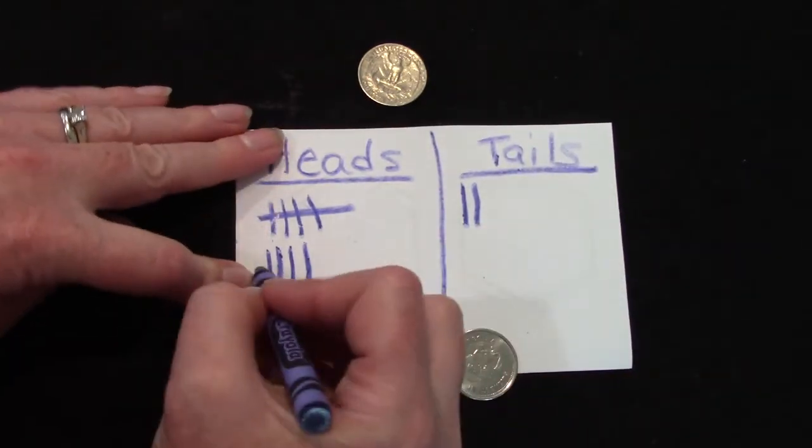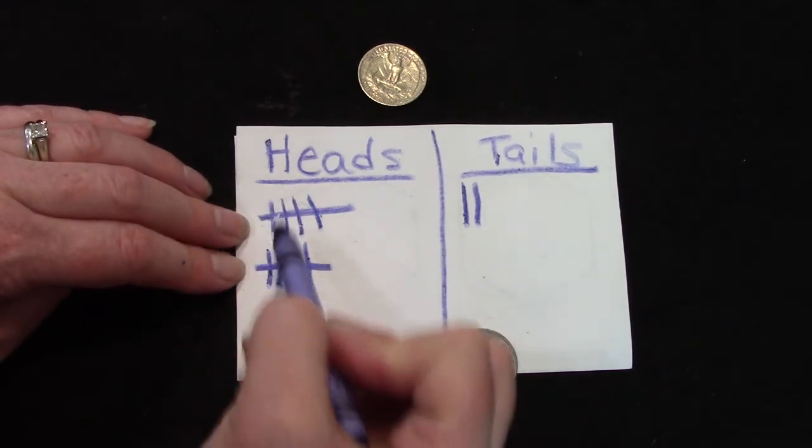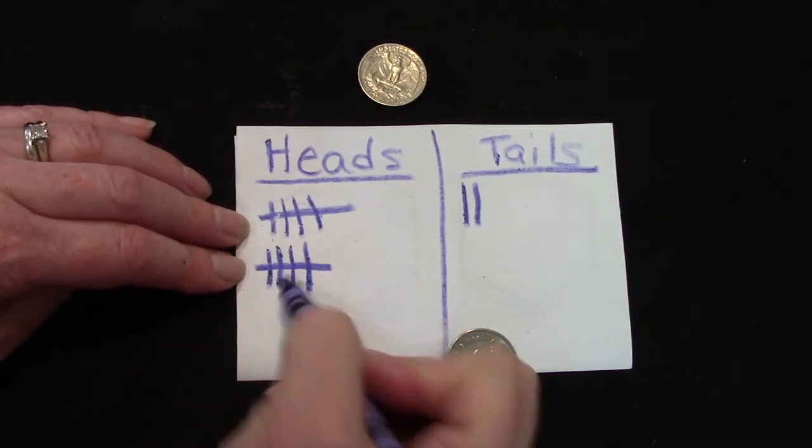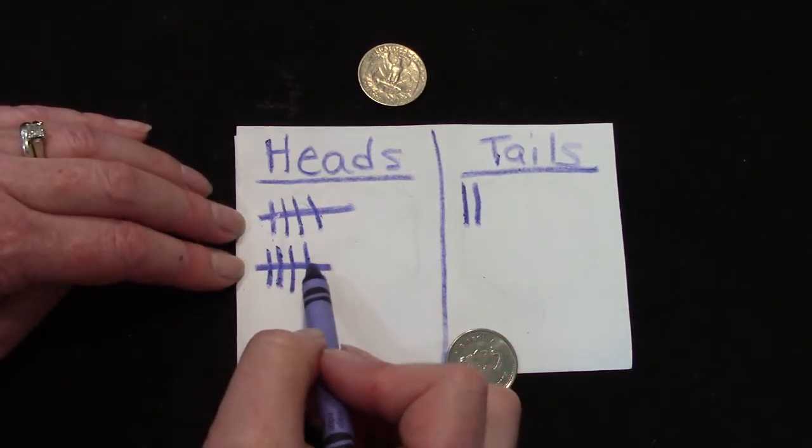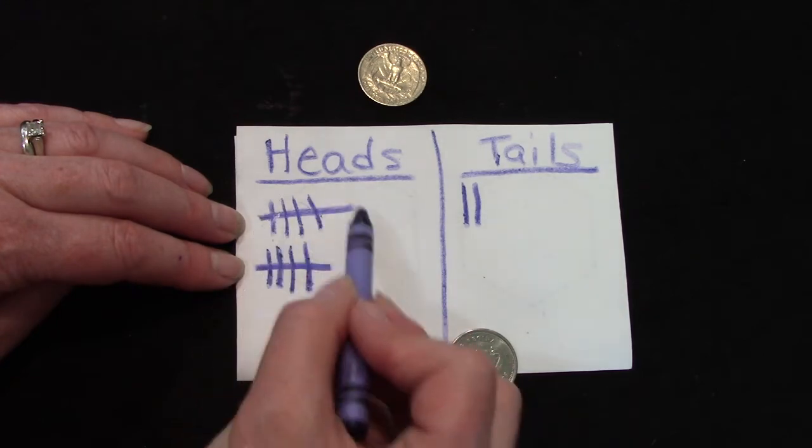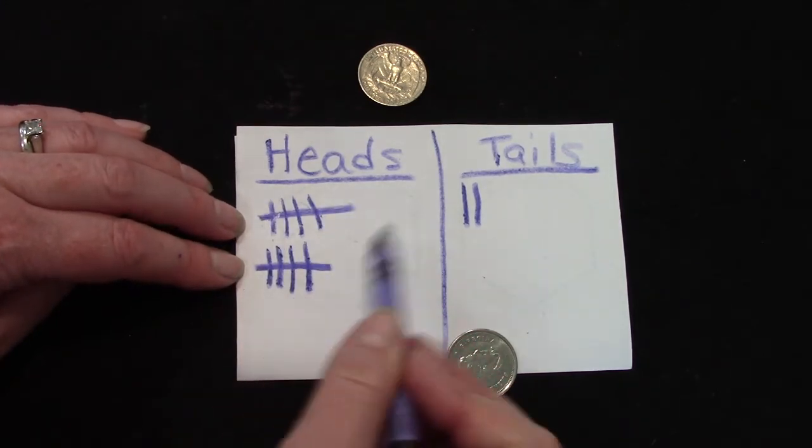Heads again. Queen Elizabeth. So we have ten heads. Five plus five is ten. We tally because when we're keeping score for something we can easily see the groups of five. Five, ten. And it makes counting a lot easier.